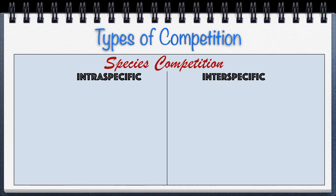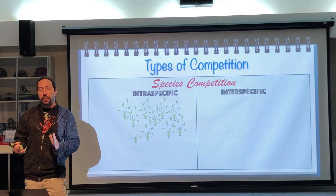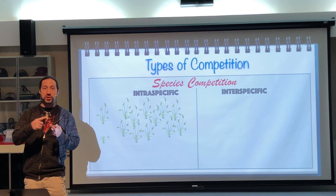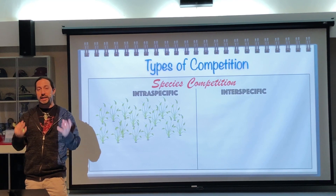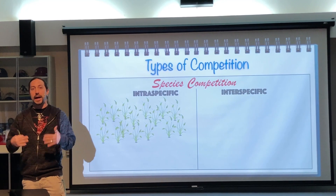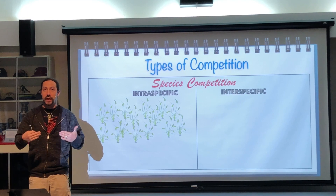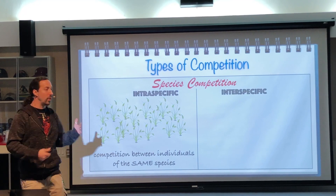There are two main types of competition. The first is intraspecific competition, which literally means competition within the same species. For example, a species of plant will compete for the exact same resources — sunlight, water, and nutrients in the soil. Those with the strongest traits that allow them to survive are going to do the best. Intraspecific competition is competition within a species.